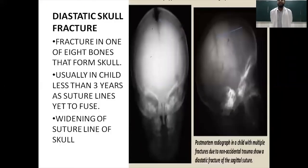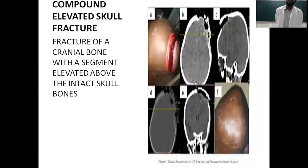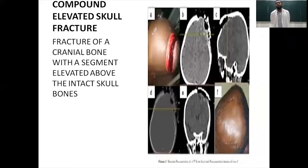A diastatic skull fracture is a fracture in one of the eight bones forming the skull, usually in children less than three years because the suture lines are yet to fuse. There is a widening of the suture line as seen in the image. Compound elevated skull fractures involve a fracture of a cranial bone with a segment elevated above the adjacent intact skull bones.